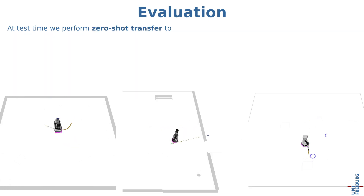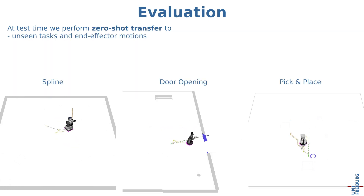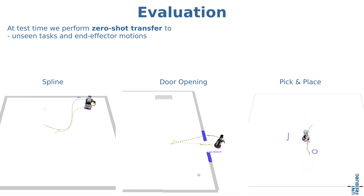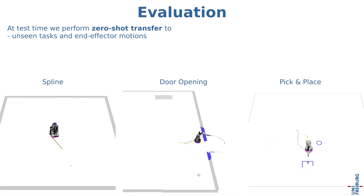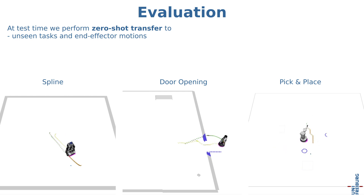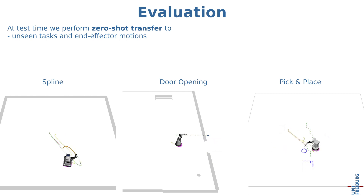At test time, we perform zero-shot transfer to unseen tasks and end-effector motions such as random spline motions, door opening tasks or pick-and-place tasks.